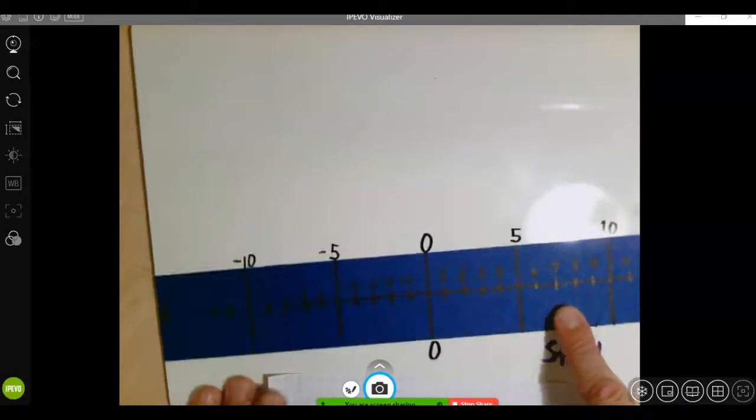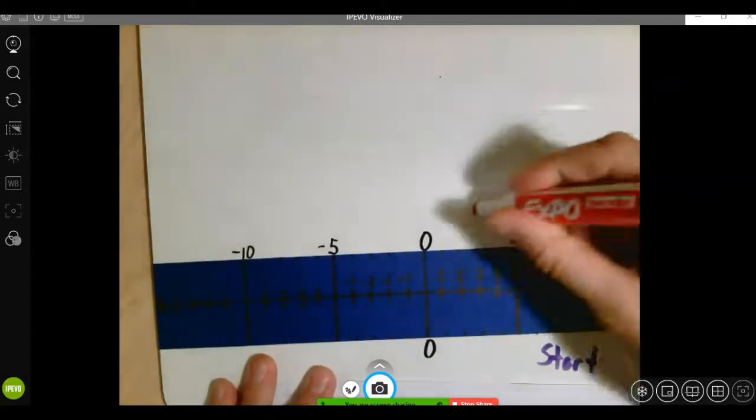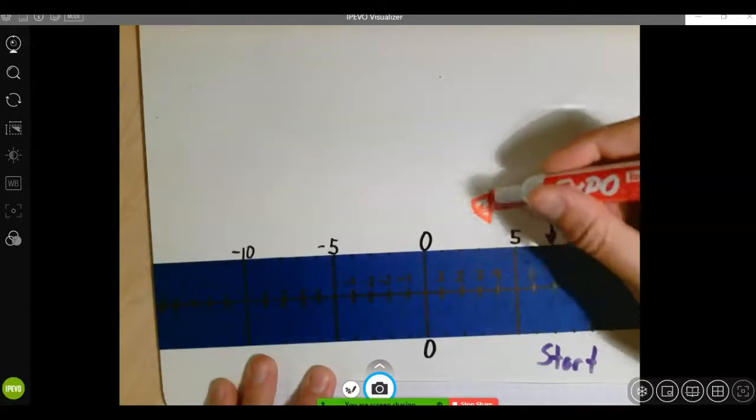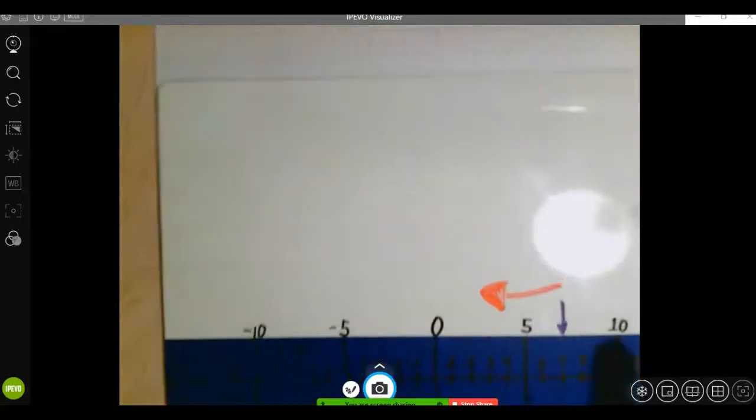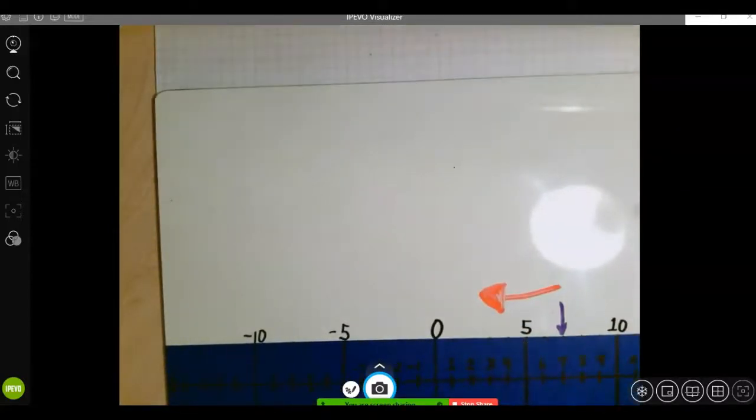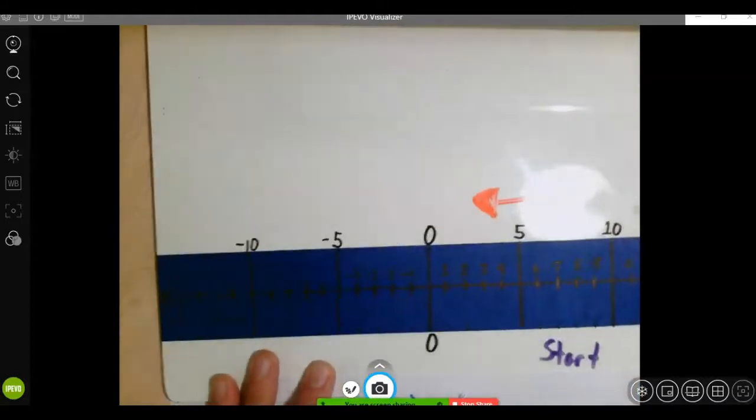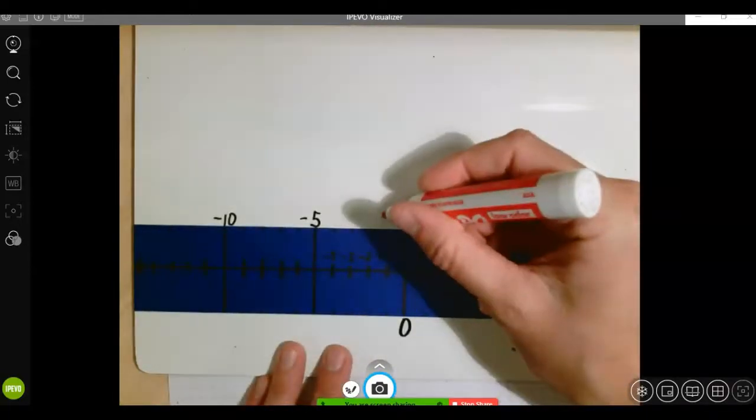Then it tells us to subtract, and subtracting is going to tell us to go left. I'm actually probably going to change colors to show the shift. Go left some amount. We don't know. That's a great looking arrow. We don't know how far, but we're going to go from our start. We're going to shift left. And then we're going to end up, they said, at negative 1. So we're going to land here.